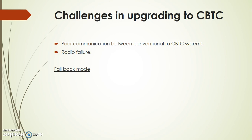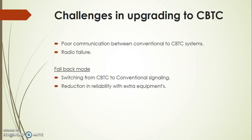Fallback mode: whenever a CBTC failure takes place, the MRT switches from the CBTC to the conventional signaling system for a shorter duration of time to maintain uninterrupted train services.